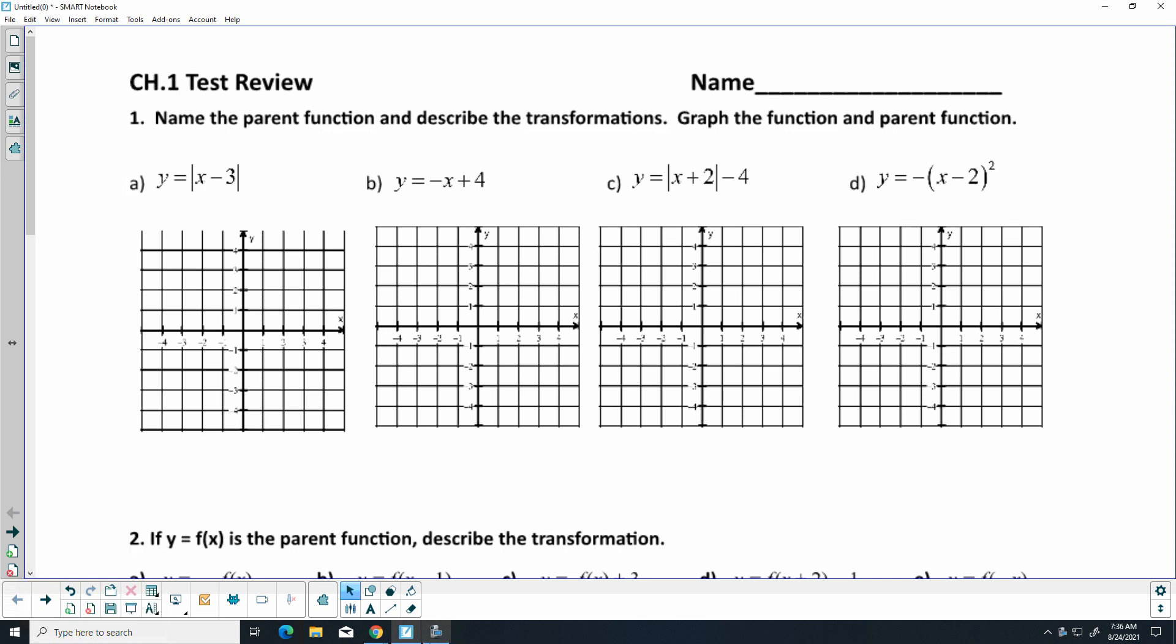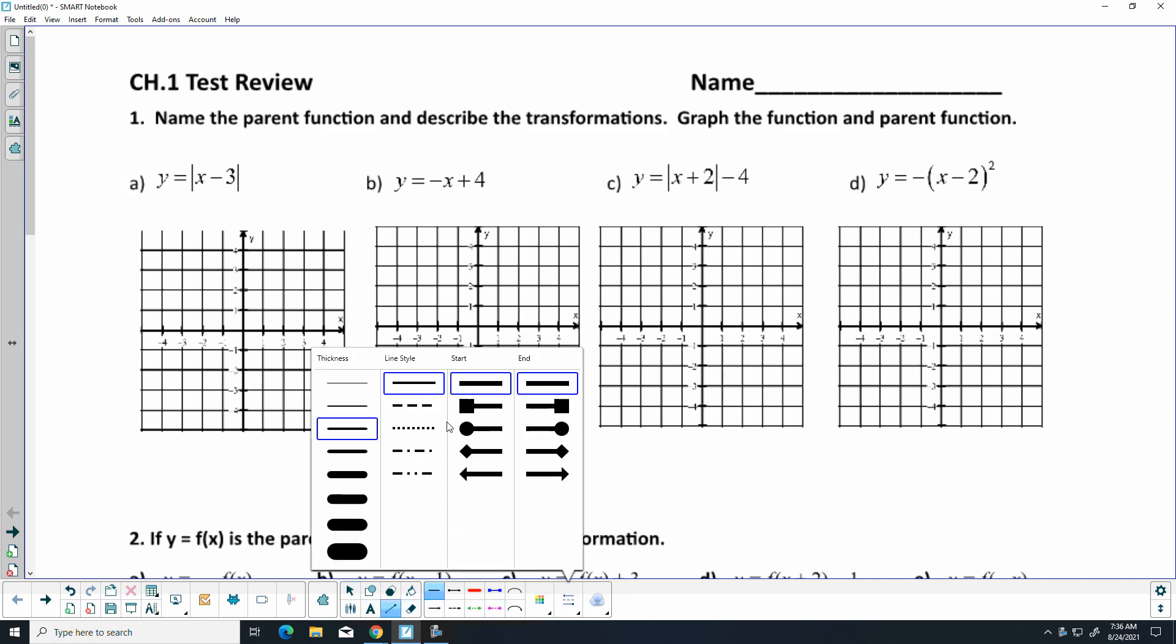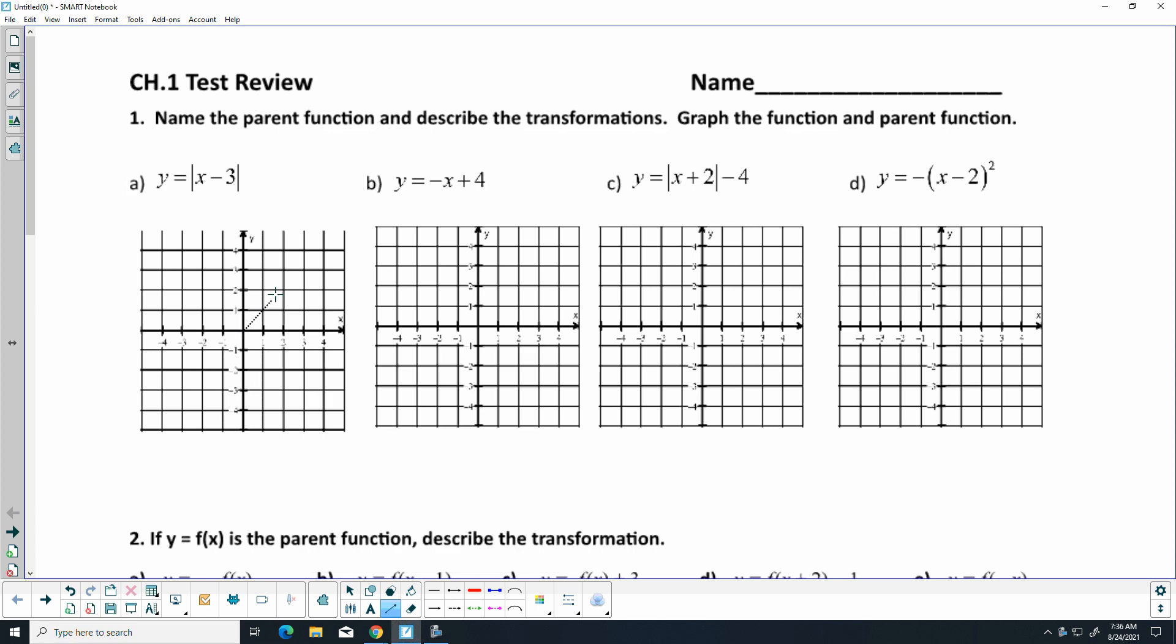All right, let's go ahead and go through some of these problems. The first one, we need to name the parent function and describe the transformation. I'm going to sketch the parent function on this one. It's an absolute value. So if I were to sketch that, I would have a V-shaped just like that. And that is within the grouping symbols, the absolute value, and it's minus 3, and it's paired with the X, so that tells me right or left, and with that minus, it's telling me that it's going right 3.